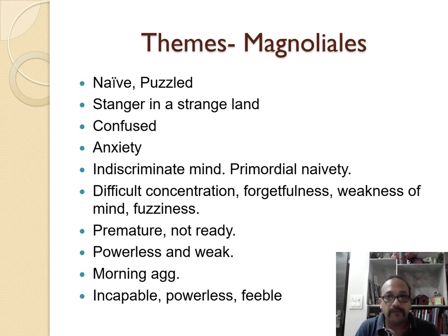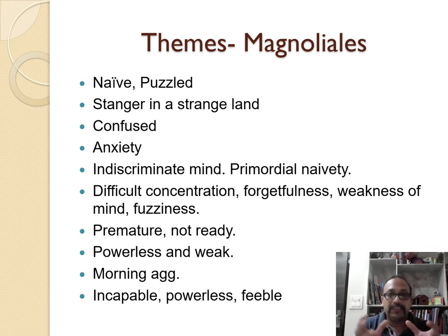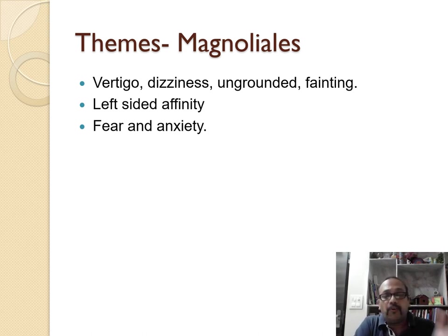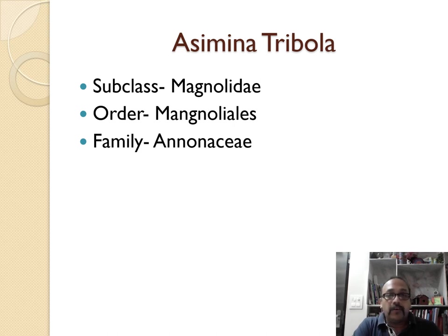They are very naive, strange, and confused, with a lot of anxiety. The womb and organs are not yet formed, so there is an indiscriminate mind, difficult concentration, forgetfulness, weakness of mind, and a premature, not-ready state. Because the fetus or organs have not been formed, they are powerless and weak — hence morning aggravation, incapability, feeblemindedness, vertigo, dizziness, and an ungrounded feeling. Their ground is not strong, there is left-sided affinity due to more feminine characters, and there are a lot of fears and anxiety.